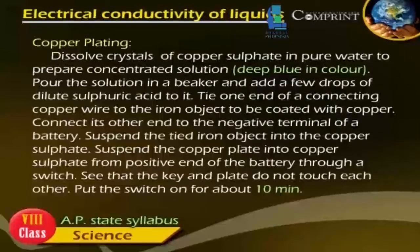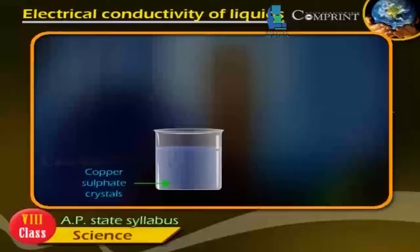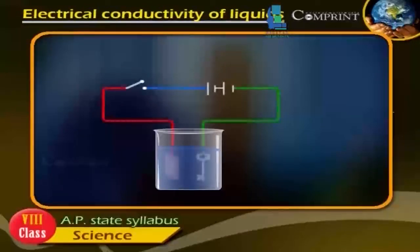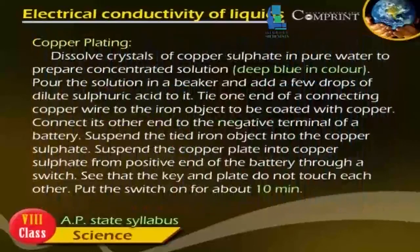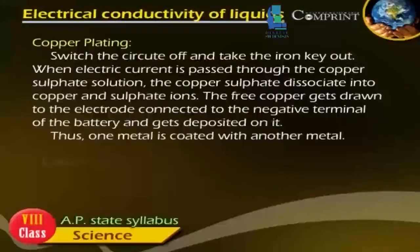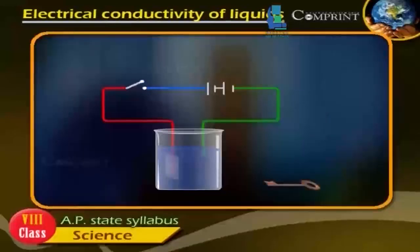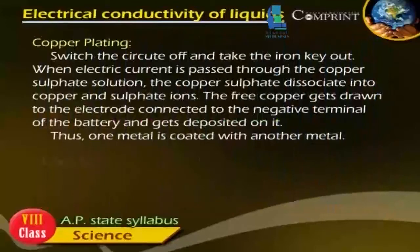Copper plating. Dissolve crystals of copper sulphate in pure water to prepare a concentrated solution. Pour the solution in a beaker and add a few drops of diluted sulphuric acid to it. Tie one end of a connecting copper wire to the iron object to be coated with copper and connect its other end to the negative terminal of a battery. Suspend the iron object into the copper sulphate solution, and suspend a copper plate into the solution from the positive end of the battery through a switch, making sure the key and plate do not touch each other. Put the switch on for 10 minutes, then switch the circuit off and take the iron key out. When electric current is passed through the copper sulphate solution, it dissociates into copper and sulphate ions; the free copper gets drawn to the electrode connected to the negative terminal and gets deposited on it. Thus, one metal is coated with another metal.